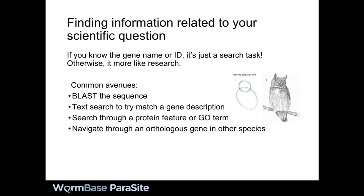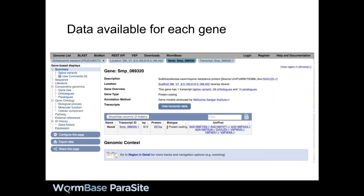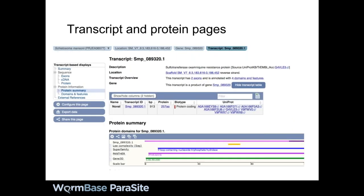We have a wealth of data available for each gene. This is a gene page featuring a special and famous gene in Schistosoma mansoni, which we'll use to demonstrate various features. The page is structured in menus where different sections are available on the left, and you can navigate to transcript and protein pages. The structure follows the gene-transcript-protein hierarchy, and while each protein will have different domains, most of the data is actually on the gene page.